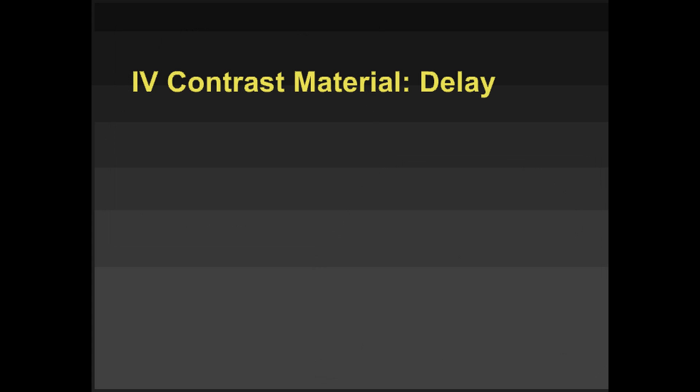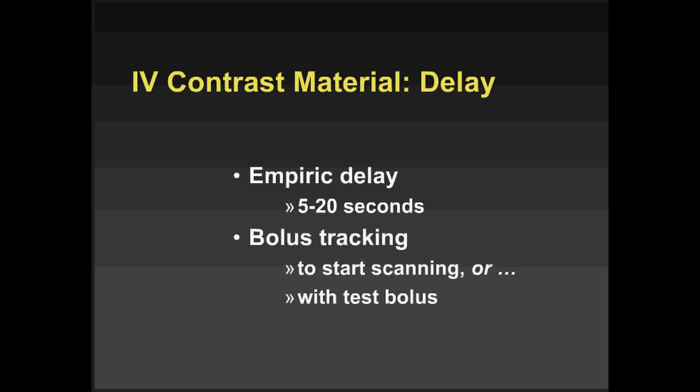The timing delay is where most mistakes are made, and with attention to detail you can get really nice examinations. You can use an empiric delay, but it's problematic because we're dealing with kids ranging from three kilograms up to a hundred kilograms. The empiric delay can be as little as five seconds for optimal arterial enhancement in the smallest children, so it's unreliable. I tend to use bolus tracking instead.